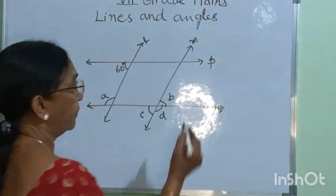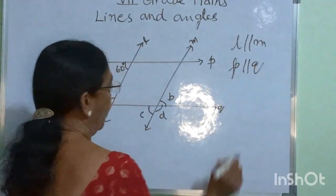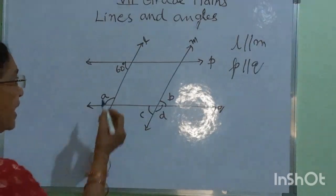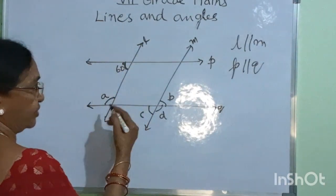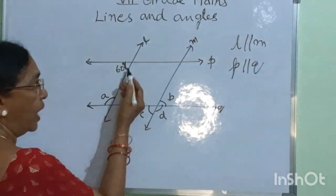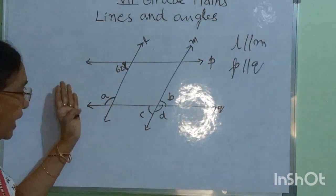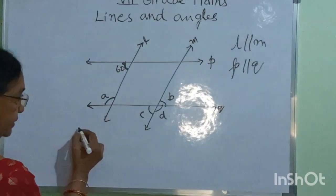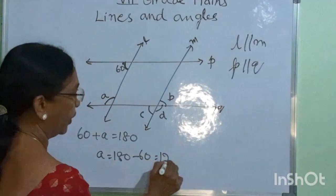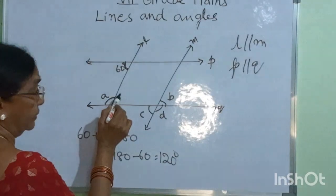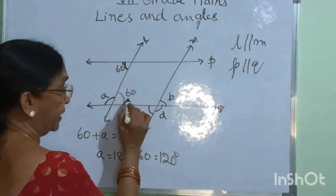Here, lines L and M are parallel to each other, L is parallel to M. Also, P is parallel to Q. Find angles A, B, C, D. 60 degrees is supplementary to A, because L is a transversal intersecting the parallel lines P and Q at different points. These two interior angles lying on the same side are supplementary. Therefore, 60 plus A is equal to 180 degrees, so A is equal to 180 minus 60, which equals 120 degrees. And 60 degrees — alternate interior angles — give B equal to 60 degrees.